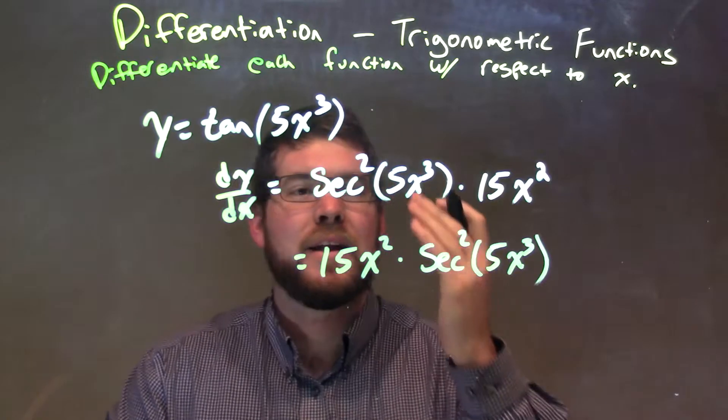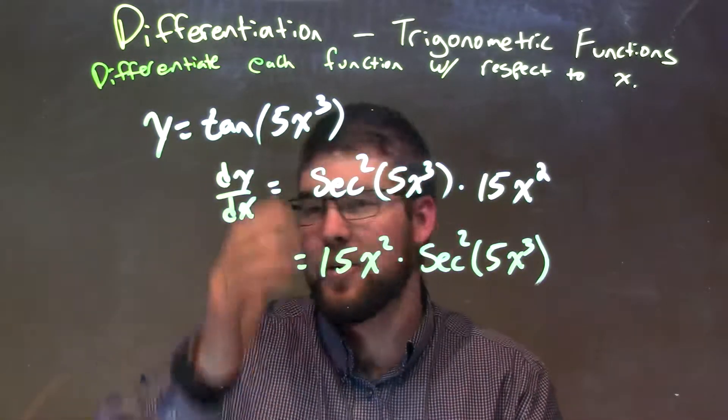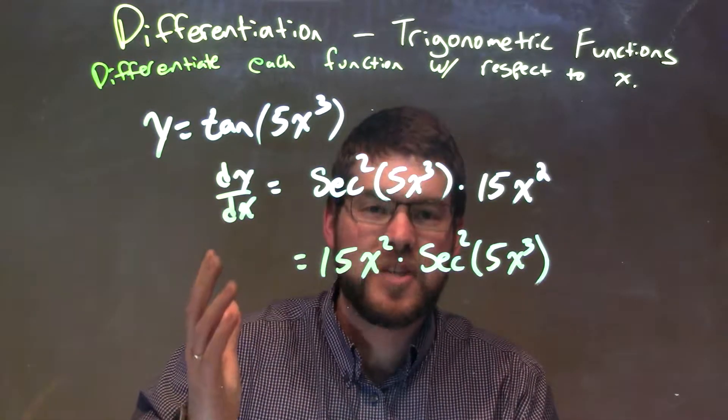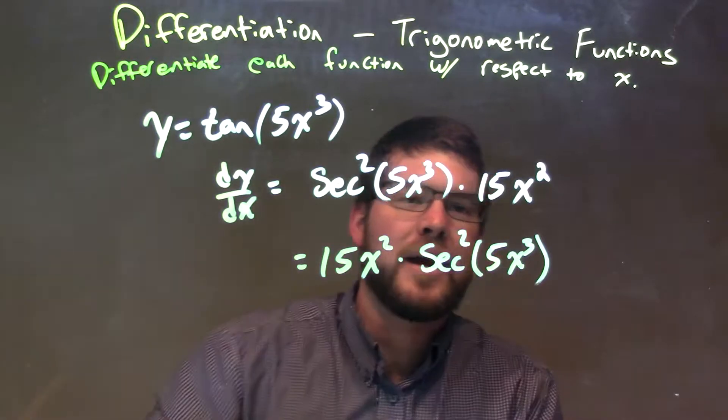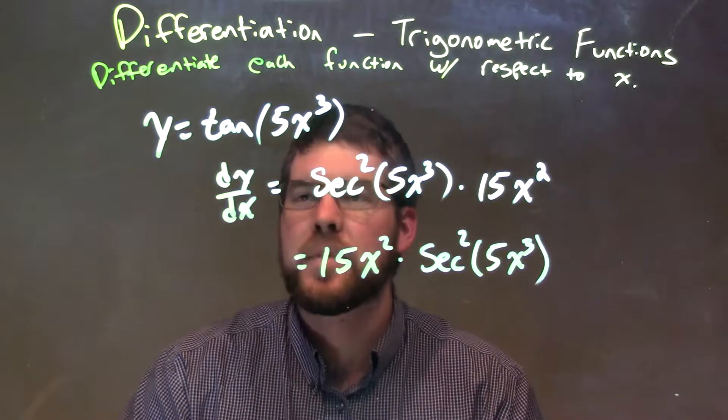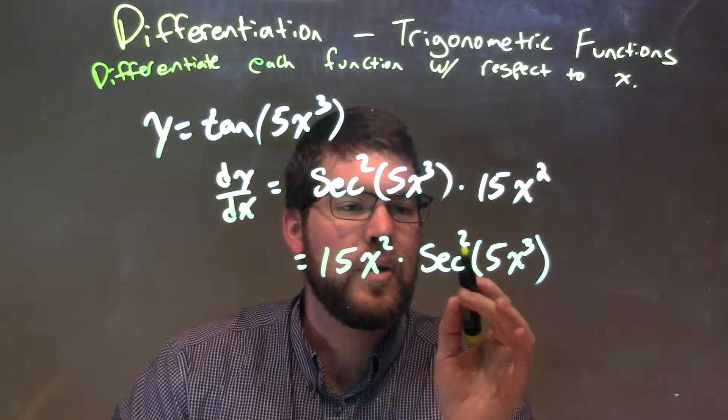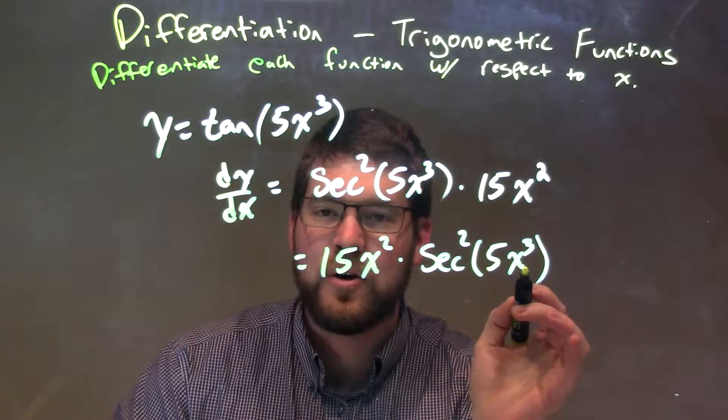We have our derivative. We applied tangent to secant squared, and using chain rule, using power rule again, got the 15x squared on the outside. So our final answer is 15x squared times secant squared of 5x to the third power.